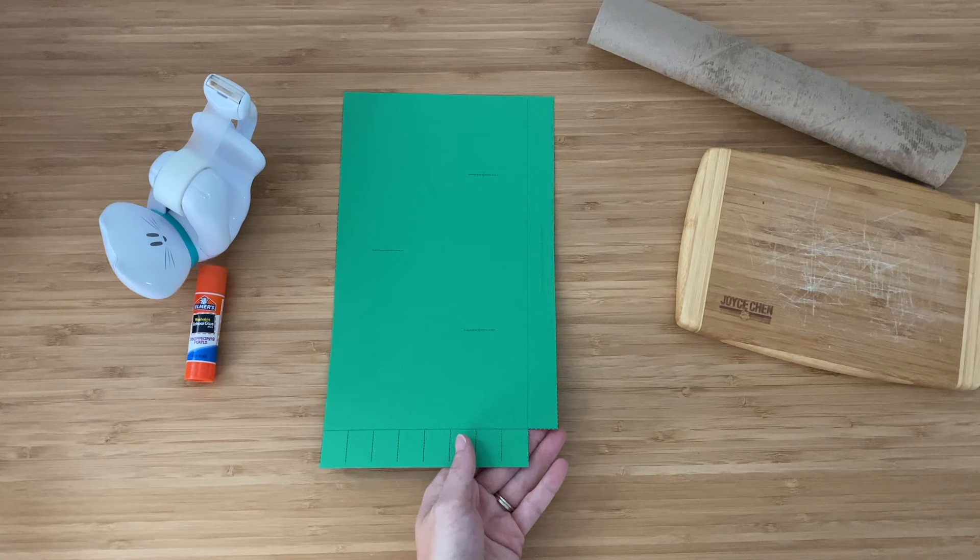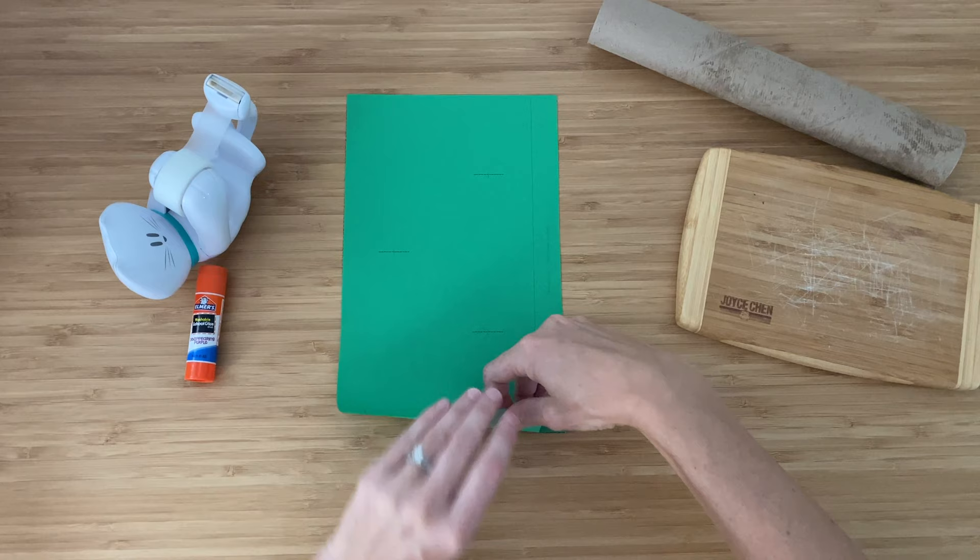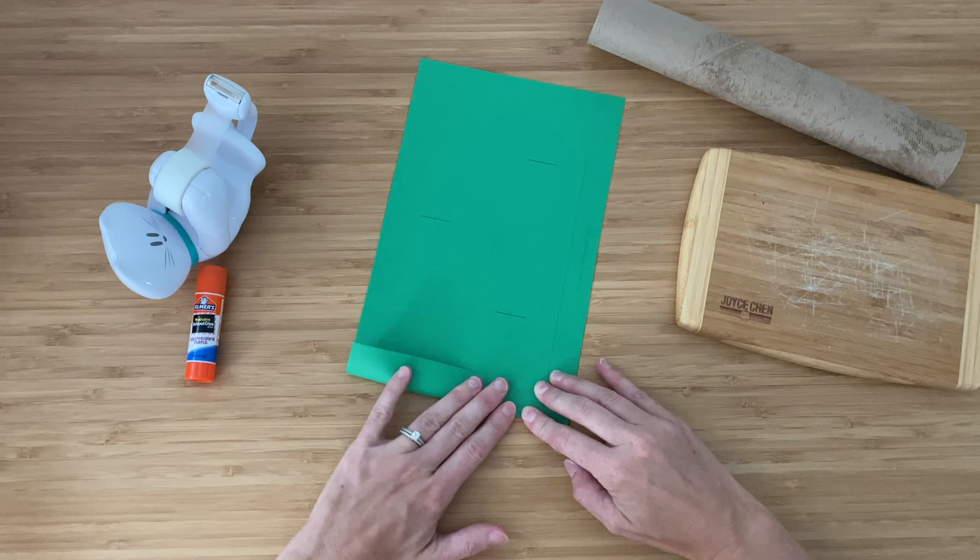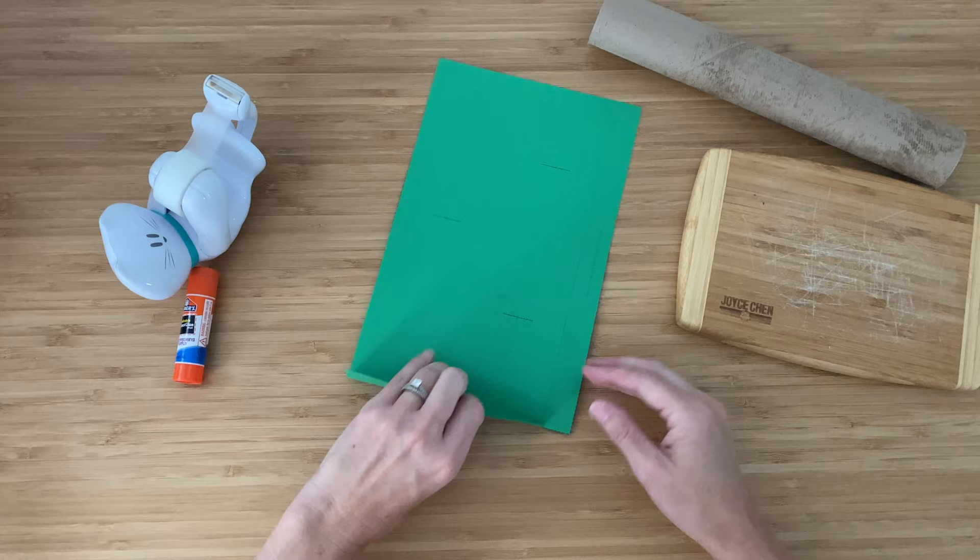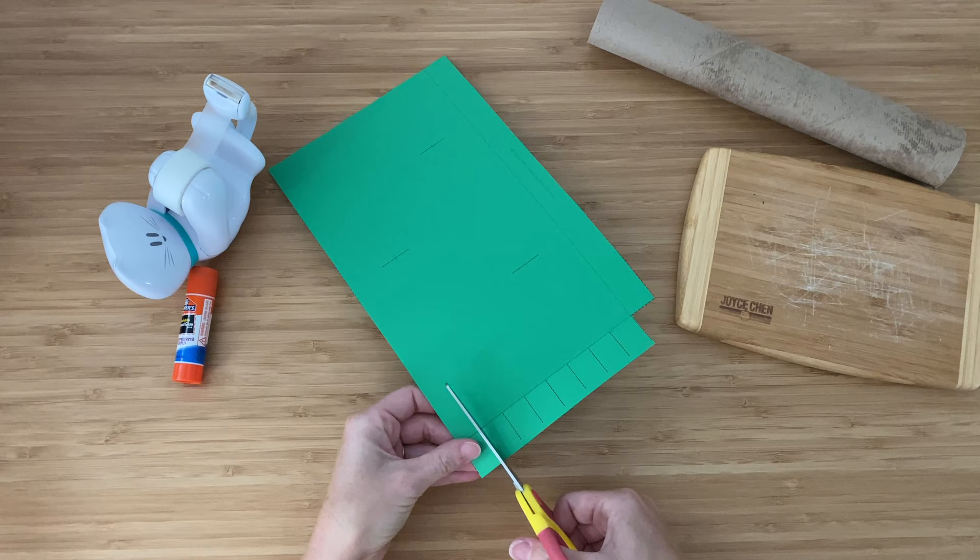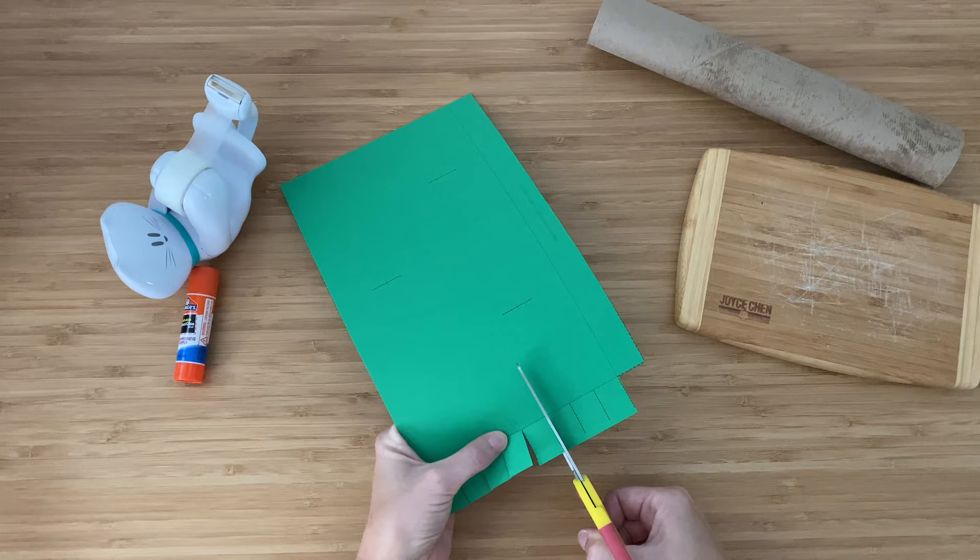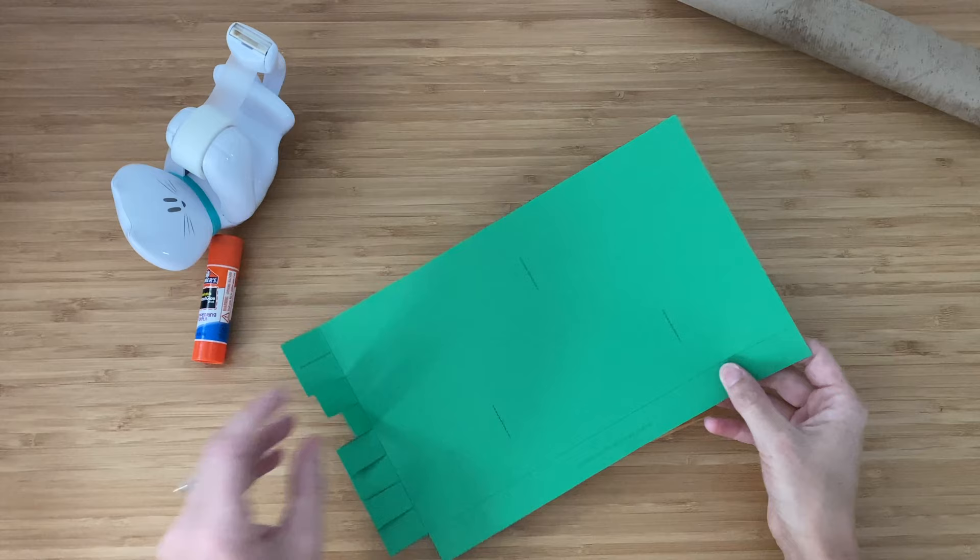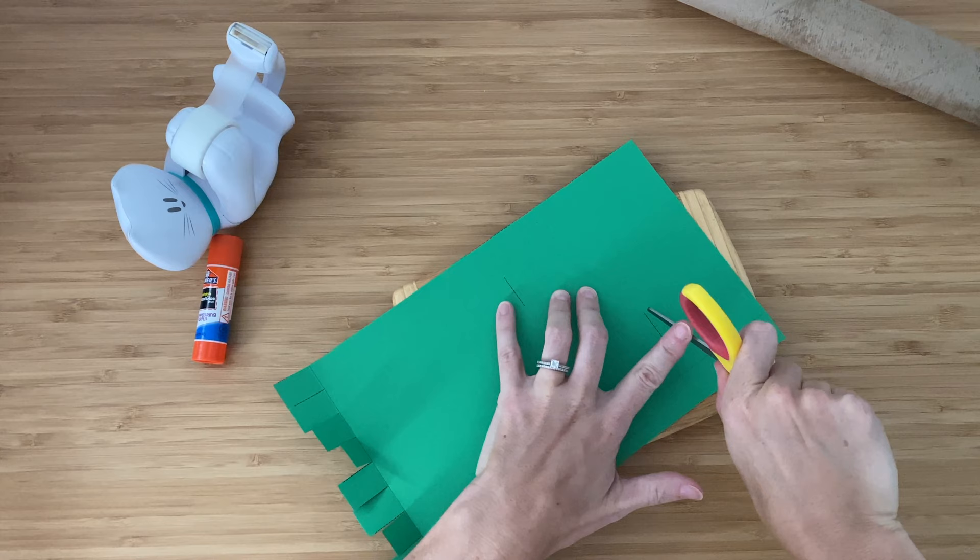Next, you'll fold on the gray dashed line and you're going to fold forward and in this case up. I'm lining up these edges to help me fold it straight. Now, I'm going to cut again on the black dashed lines. Now comes the part where you may want your cutting board and a craft knife. You're going to cut on these black dashed lines.